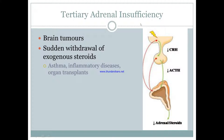Tertiary adrenal insufficiency can be caused by brain tumors, but mostly it's caused by sudden withdrawal of exogenous steroids. A typical board question involves a patient with inflammatory disease, organ transplant, or asthma — any reason they would be on steroids — and then suddenly stopping them. If you take it away, you're not getting any cortisol because the whole HPA axis is suppressed. You don't have CRH, ACTH, or steroids, so you can cause hypotension and the patient can die.